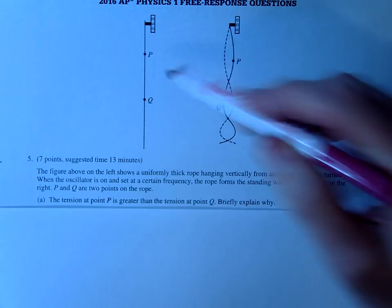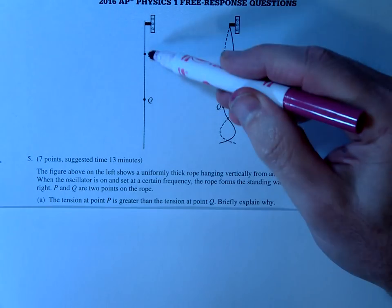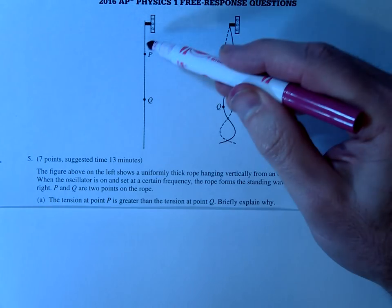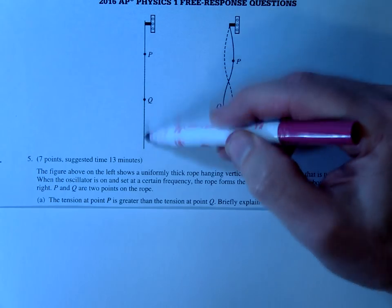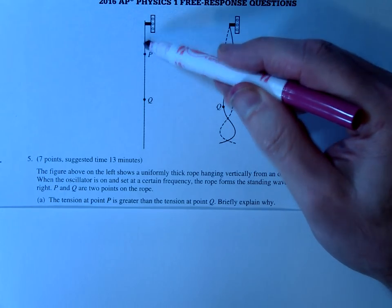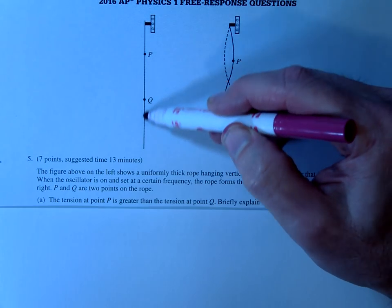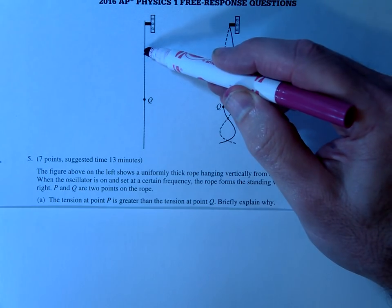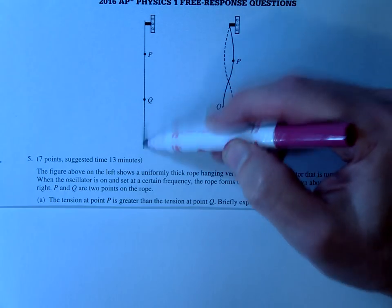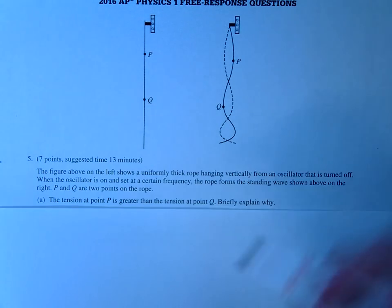So notice the tension is coming from the weight of the rope. The rope is pulling down and the weight of the rope is pulling down and then there's going to be tension going up. So notice in point P there's more weight below than there is above. So therefore compared to Q, there's going to be a greater tension.